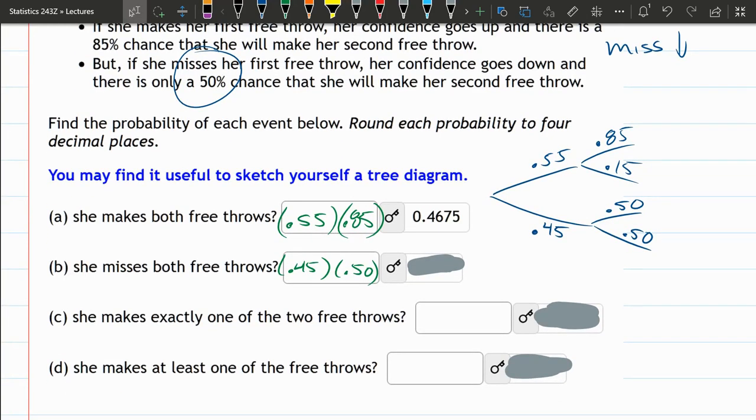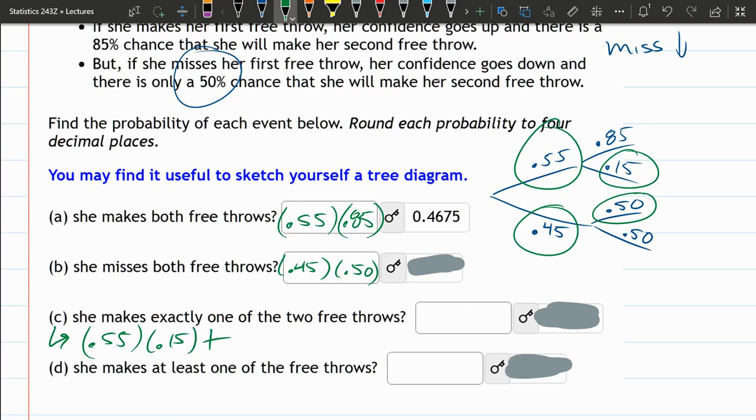All right, part C. She makes exactly one of the two. Now, this one's a little tricky because there's two possibilities. You could make and miss, or—and the or is important because you're going to add—you can miss and then make. So we could do .55 times .15, which is make then miss. Plus, because it's or, .45 times .5. You add that, and you should have that number.